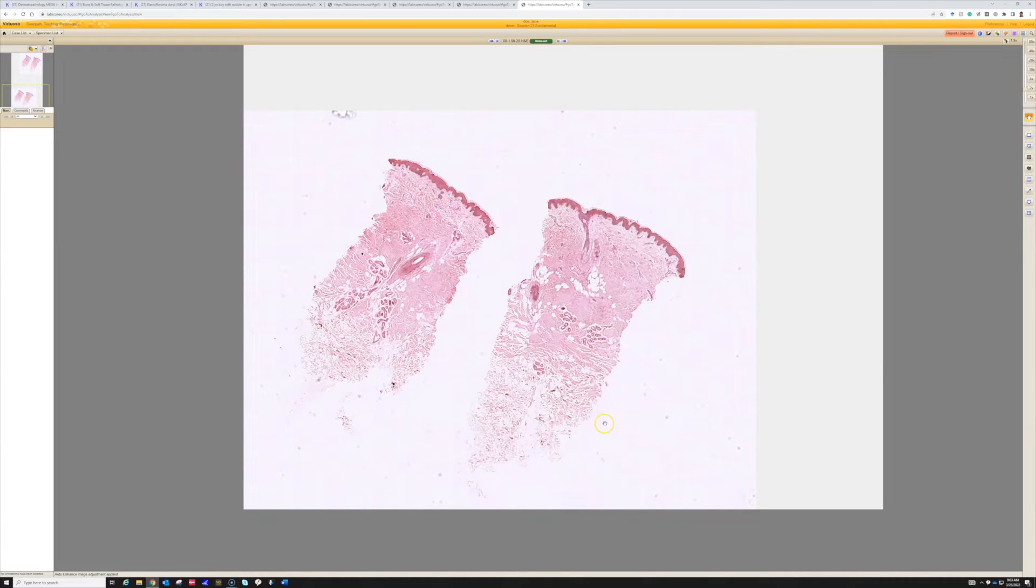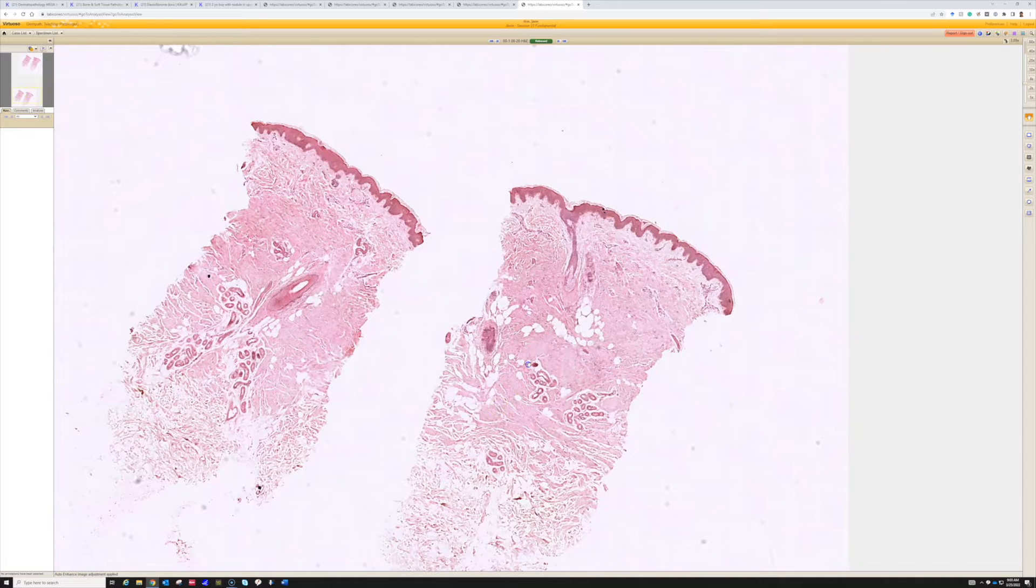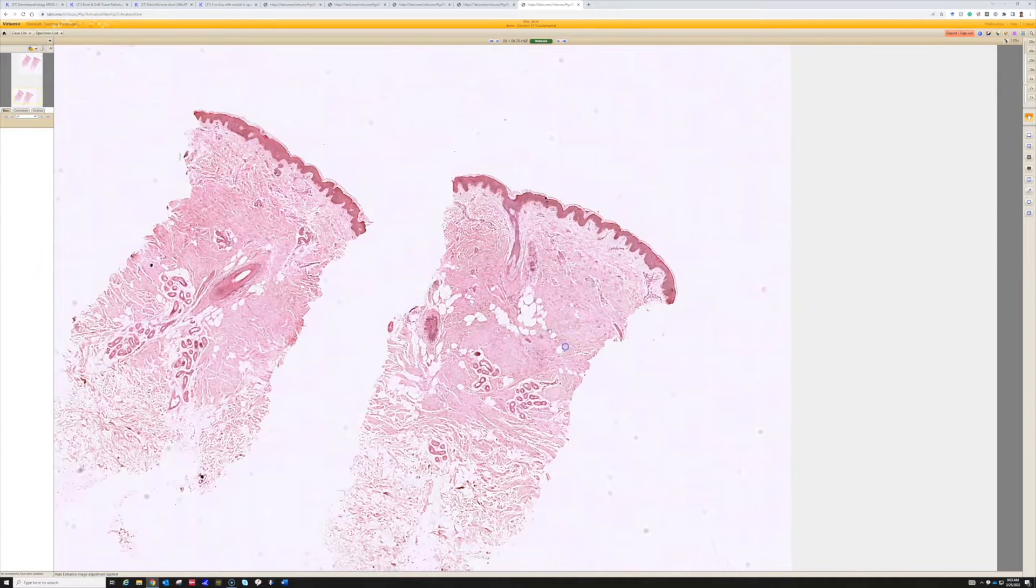So this is a nice biopsy. We have a punch biopsy here, and you can see in the middle of the specimen there's this pink area kind of forming a band. You can imagine this was like a wider plate-like lesion that we just punched one punch down in the middle of.